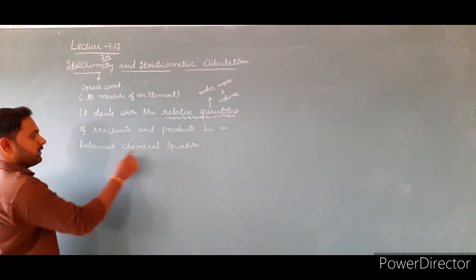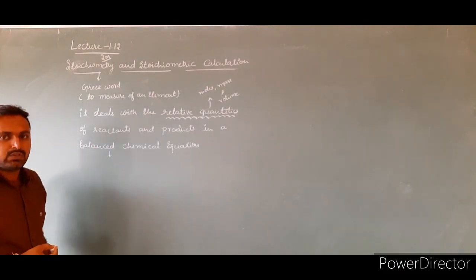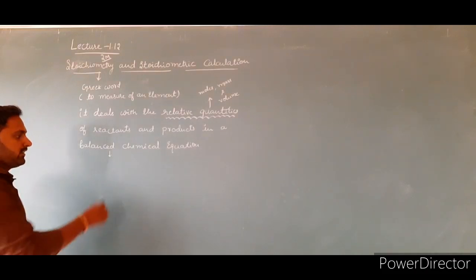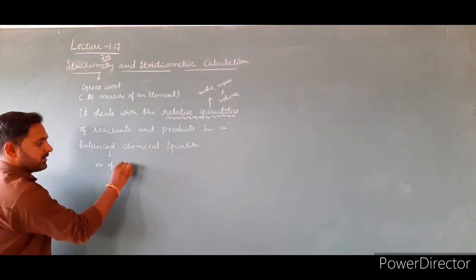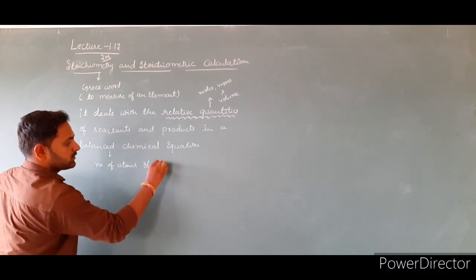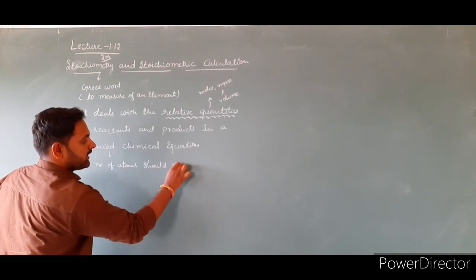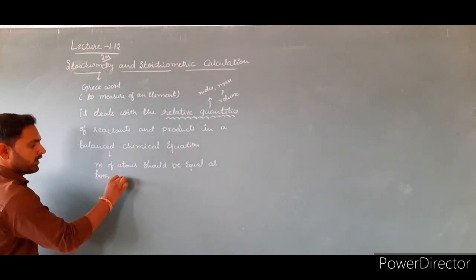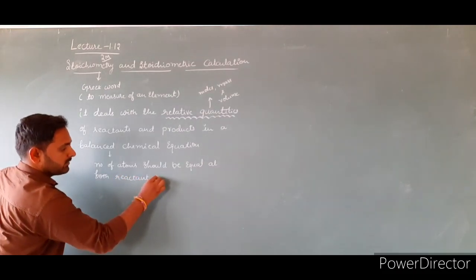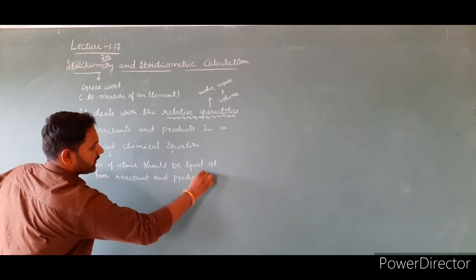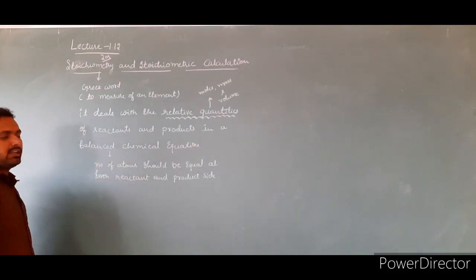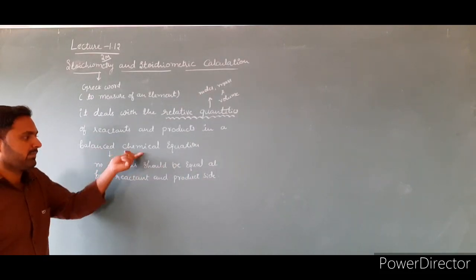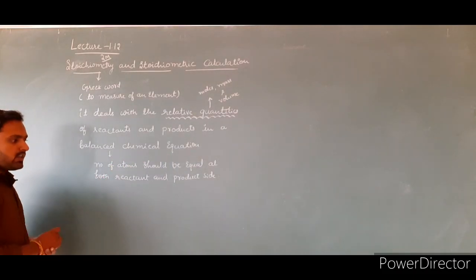What is a balanced chemical equation? In a balanced chemical equation, the number of atoms should be equal at both the reactant and product side. If the number of atoms are equal at both sides, then we call it a balanced chemical equation. Now let us take one example.